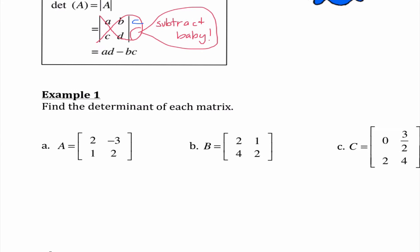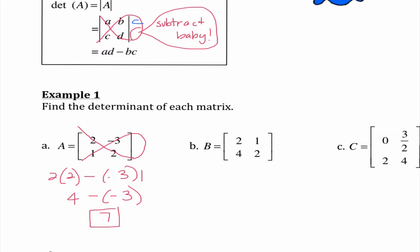Let's go ahead and do this. For number A, we're going to find the determinant of this matrix. I'm going to start by doing 2 times 2. Mr. Determifish says subtract, baby. So I'm going to put minus negative 3 times 1. So I get 4 minus negative 3, which gives us 7. For the next one, 2 times 2 — Mr. Determifish says subtract, baby — 1 times 4. Four minus 4 gives us zero.